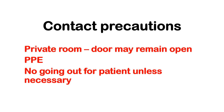What are the contact precautions? Admit the patient to a private room — the door may remain open. Use PPE; what PPE you use depends on what you are going to do. You will always need gloves, but you can add other PPE depending on the activity. No going out for patient unless necessary. The indication for contact precautions includes multi-drug resistant organisms such as MRSA — methicillin-resistant Staphylococcus aureus.